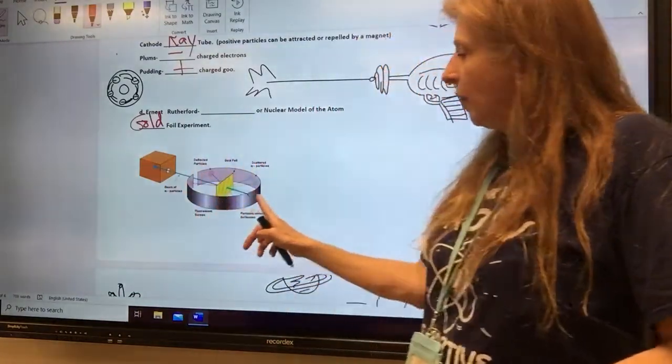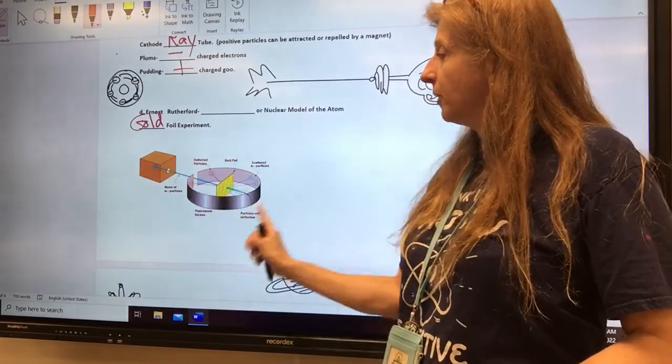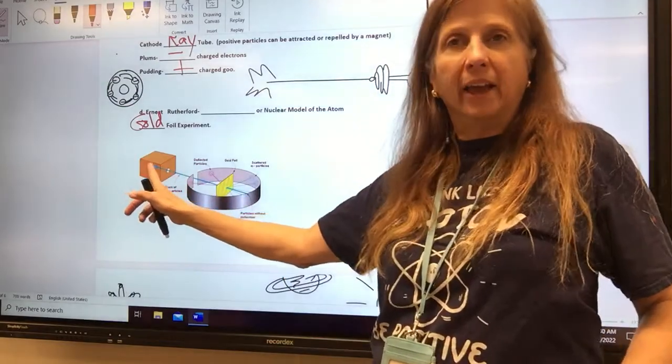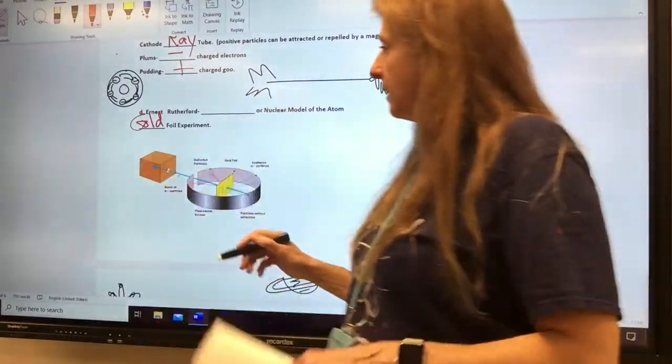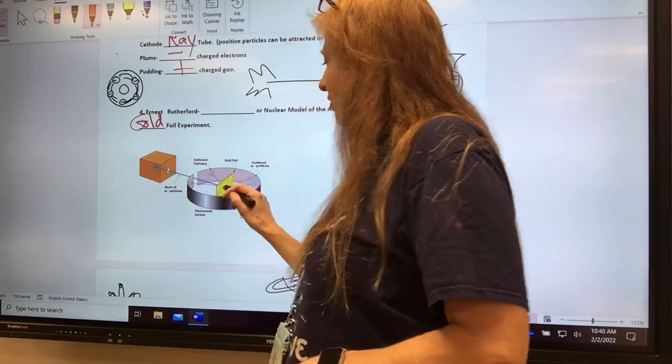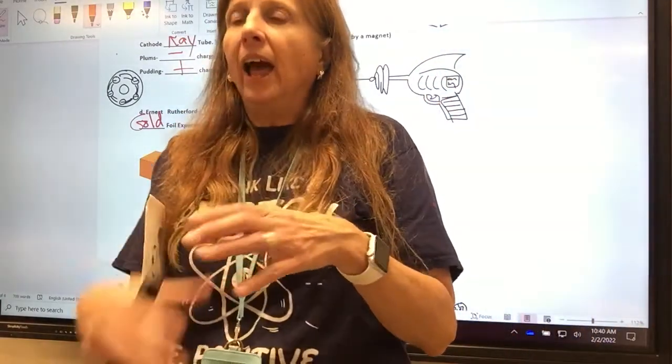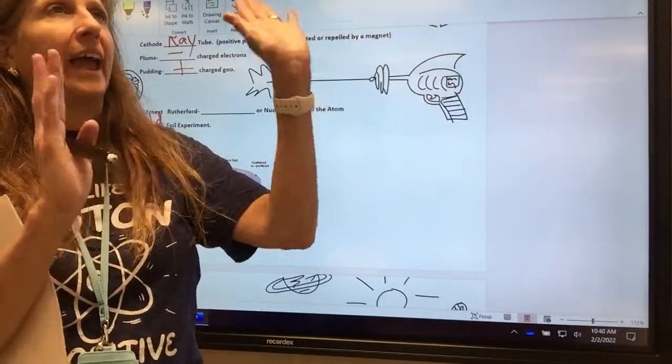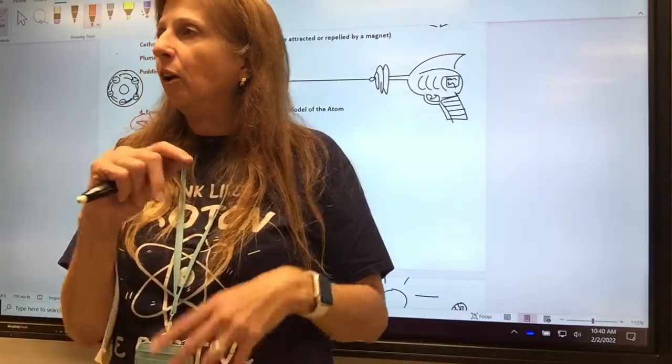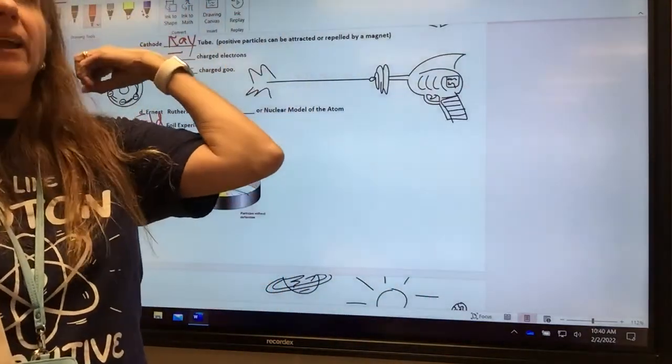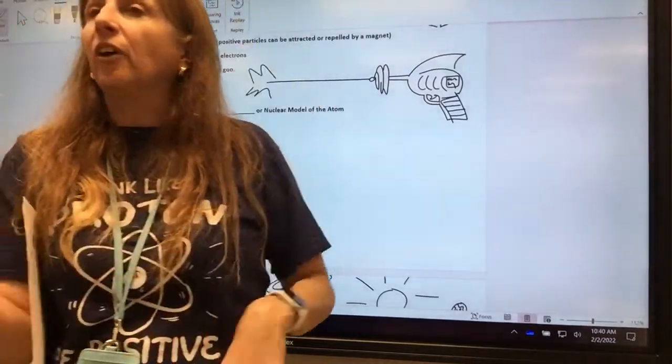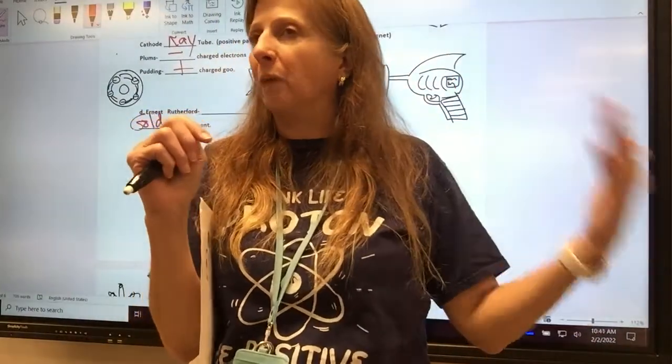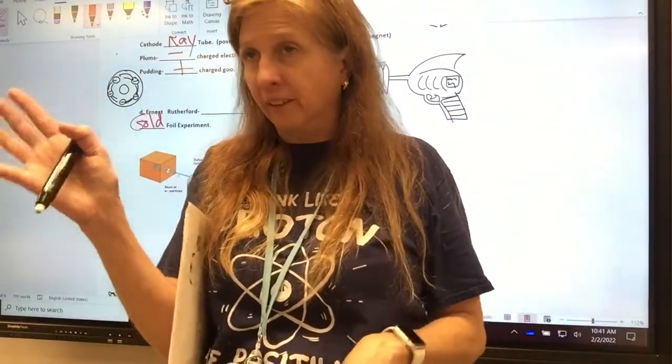This is how it was set up. They put the gold foil in the middle of a screen that would flash, glow in the dark, every time it got hit with the ray gun. Imagine that if you had a dish of pudding, and you shot a gun at it toward a wall, what would the wall look like afterwards? A big old mess, right? Big old, like, brains, pudding on the wall. Big old splat. So that's what they were expecting to get, and it was going to prove the plum pudding model was right.